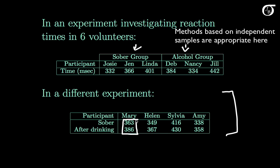So here we have two measurements on the same individual. Here we have reaction times, sober and after drinking for Mary, and then for Helen, etc.